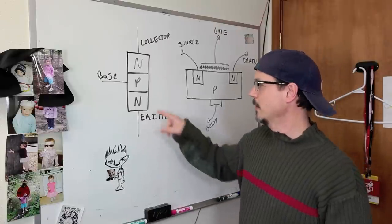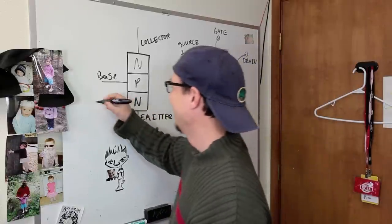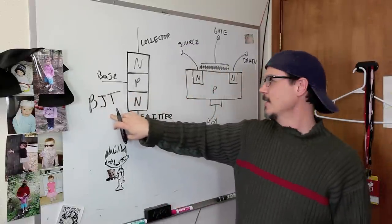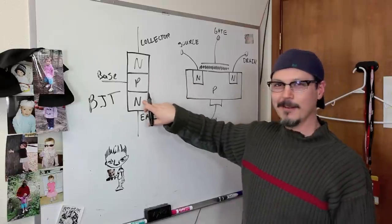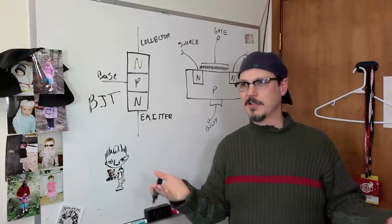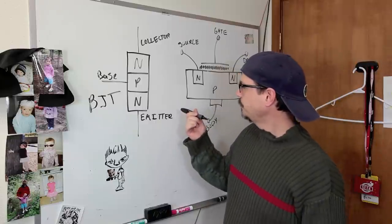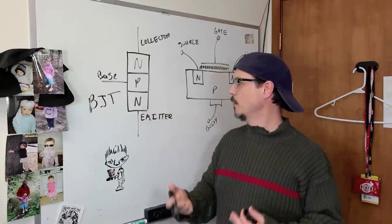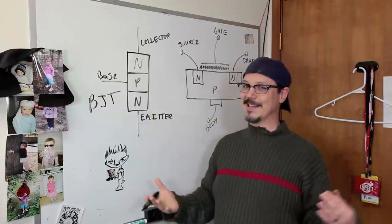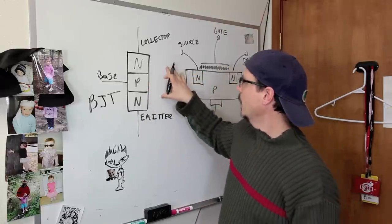If you remember from a previous episode, this is a BJT, a bipolar junction transistor. It's made up of three different regions. We've got an N region, a P region, and another N region. So this is an NPN transistor, like a 2N3904, garden variety. The N region is doped in such a way that it has an excess of electrons. The P region is doped in such a way that it has an excess of holes. And then you get another N region up here.